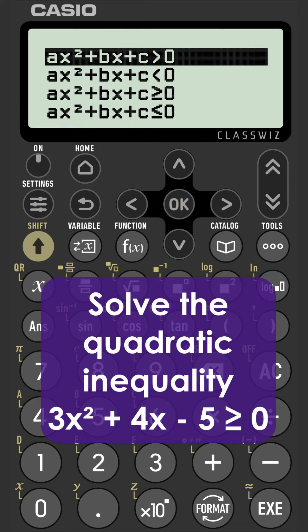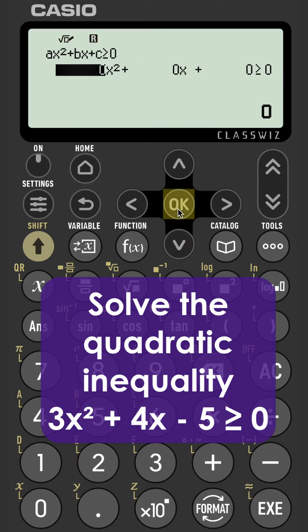And then we're selecting the option that fits the question that we have, that's greater than or equal to 0.